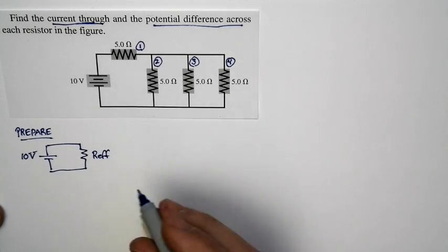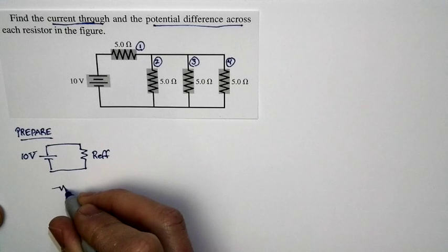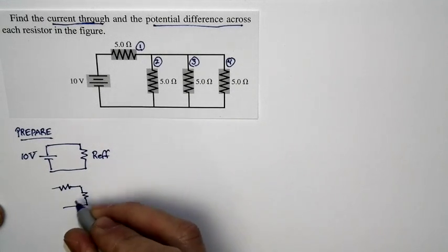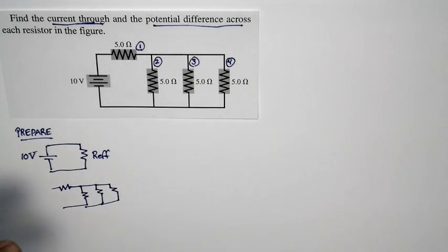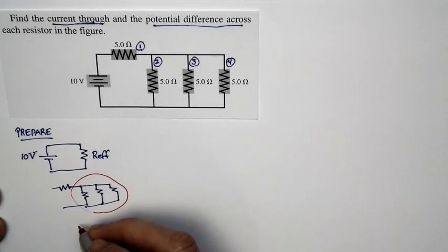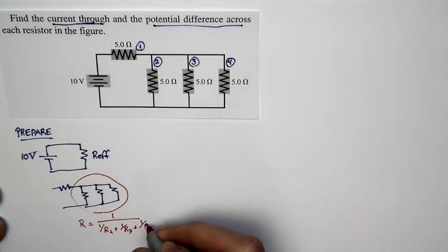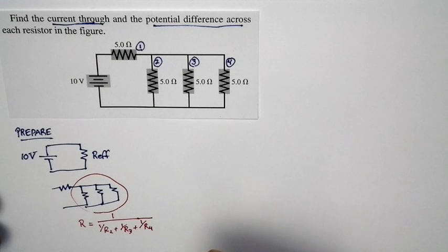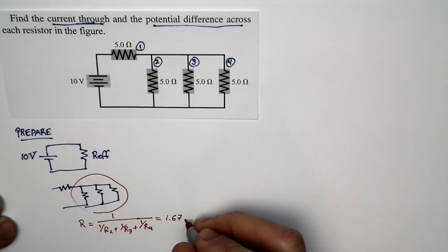How do we get the effective resistance of the whole circuit? We're going to break it down in parts. We've got a single resistor here and then three resistors connected in parallel with each other. The resistance of those three is 1/R2 + 1/R3 + 1/R4. That's 1/5 + 1/5 + 1/5, and we end up with 1.67 ohms.